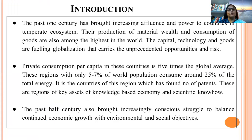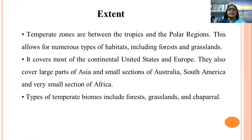These countries of the temperate region are countries with the highest per capita income and great lifestyle. The production and consumption patterns have definitely created a lot of environmental issues. The extent of temperate zone is between the tropics and the polar regions, in both the north and southern hemisphere. This allows for numerous types of habitat, including forest and coastal areas.